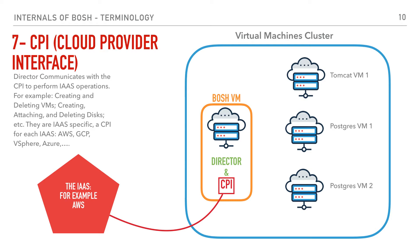For example, creating and deleting VMs, creating, attaching and deleting disks, and some other common IaaS actions. It's also worth mentioning that it's possible to have a director configured with multiple CPIs — that is, you can deploy VMs on multiple IaaS platforms using the same BOSH director.